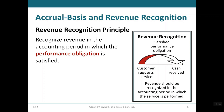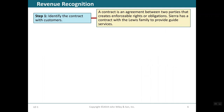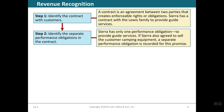A service company recognizes revenue when the services are performed, and revenue recognition results in five main processes. First, identify the contract with the customer — a contract is an agreement between two parties that creates enforceable rights and obligations. For example, Sierra has a contract with the Lewis family to provide guide services. Second, identify the separate performance obligations in the contract. Sierra has only one obligation to provide guide services; if it also agrees to sell camping equipment, that is a separate performance obligation.